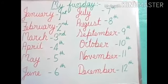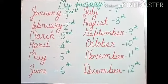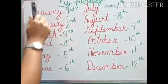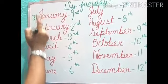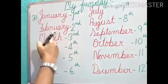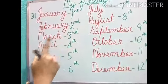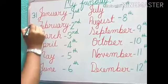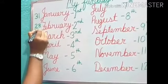Have you remembered the number of days I told you in the past video? January has 31 days. February has 28 days, or when it is a leap year, February has 29 days — so 28 or 29.